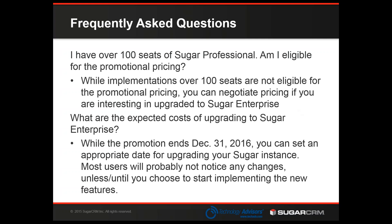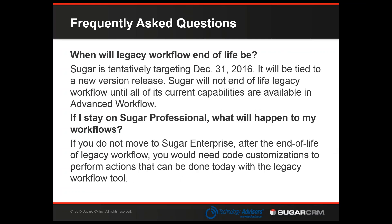Regarding the expected costs of upgrading to Sugar Enterprise: the upgrade itself is actually very simple — it's just Sugar flipping a switch on the back end, activating these new features. Users will probably not notice anything different. The only thing to watch out for is the Revenue Line Items feature — making sure that stays turned off if you don't want to use it. Unless or until you start implementing these new features, the user experience is the same between Sugar Professional and Sugar Enterprise. Also, while the promotion ends December 31st, 2015, you don't actually have to upgrade to Enterprise by that date. You can wait until January, February, March, or April to actually switch, as long as you commit to the deal by the end of this year.